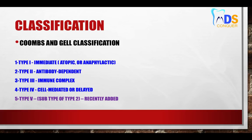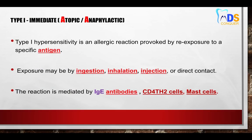Initially the classification contains only four types: Type 1 immediate, which is also called atopic and anaphylactic — these two are subtypes of Type 1. The second is antigen-antibody mediated, third is immune complex mediated, and Type 4 is cell mediated, also called delayed hypersensitivity. Recently added is a fifth type, which is sometimes called a subtype of Type 2.